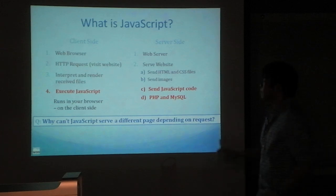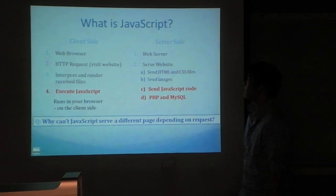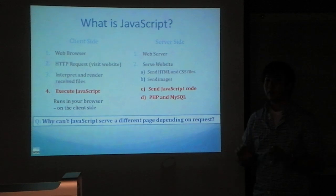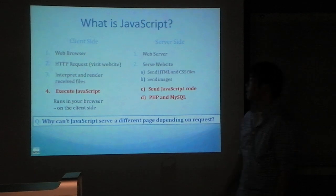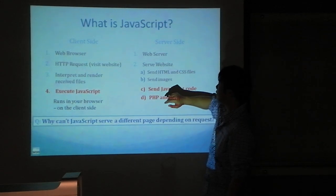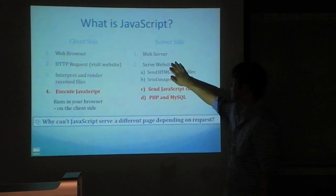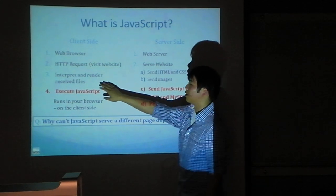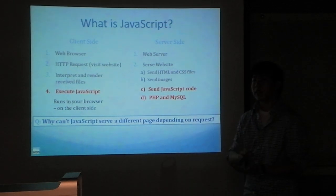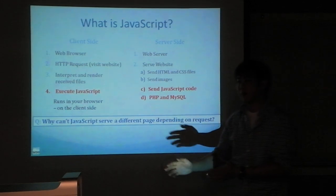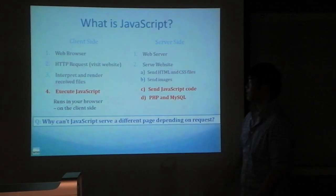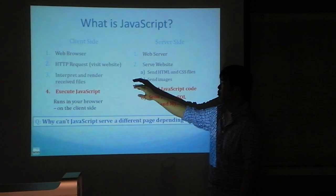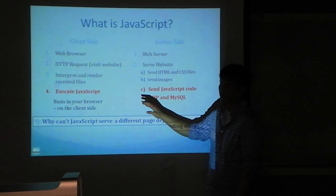Here's a more in-depth look at what JavaScript does. When you enter a URL, from the client side you go to the web browser and request the URL. On the web server, the server receives the request and sends out the HTML and CSS. The browser then interprets and renders those received files. Remember, HTML is hypertext transfer protocol, meaning it adds special links to other resources on the web, so just loading one HTML file can load other files like images and CSS. After all that's done, JavaScript gets executed.